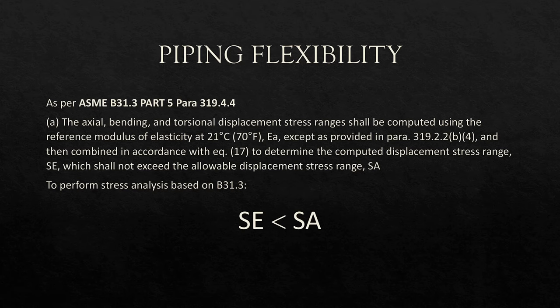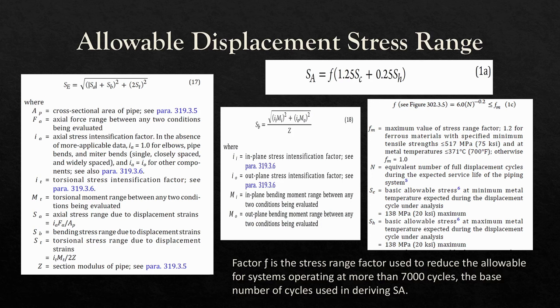As I had mentioned, ASME B31.3 paragraph 319, titled 'Piping Flexibility,' requires us to study the flexibility of the pipe through the thermal action and its effect on the pipe, and requires that stress SE should be less than the allowable stresses. The code also provides these equations to use as limitations for our studies.